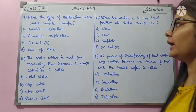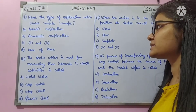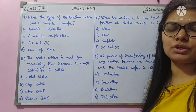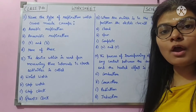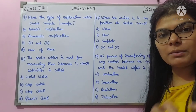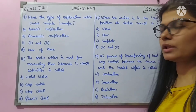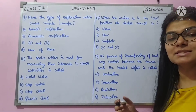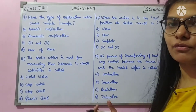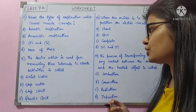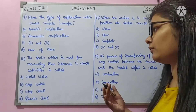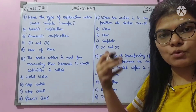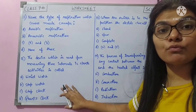Question number 11: name the type of respiration which causes muscle cramp. Muscle cramps occur due to anaerobic respiration. When oxygen deficiency occurs in the muscles — after excessive exercise or running — cramps and pain happen. This is due to anaerobic respiration, which occurs in the absence of oxygen.